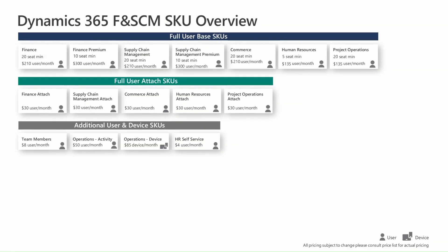The lowest level of access within the application starts with team member. A medium access level would be an activity user — these are people performing various activities in the system. Then we have full and attached users, who are performing either one or multiple workloads requiring multiple different licenses. Users utilizing functionality at the highest levels may have multiple security roles or objects requiring a full license, or if they require multiple workloads, attached licenses as well. There are also device use cases, which provide specific functionality for shared access within D365, whereas all other use cases are for individual access.